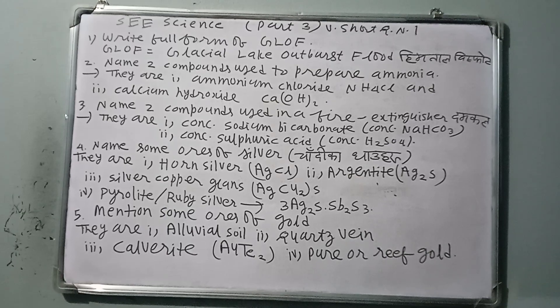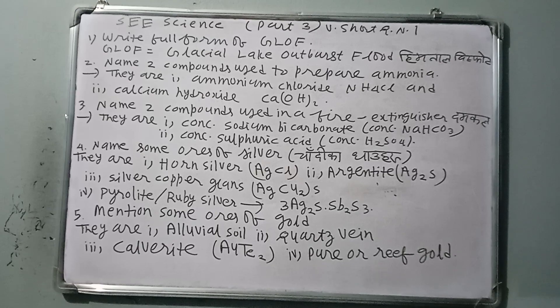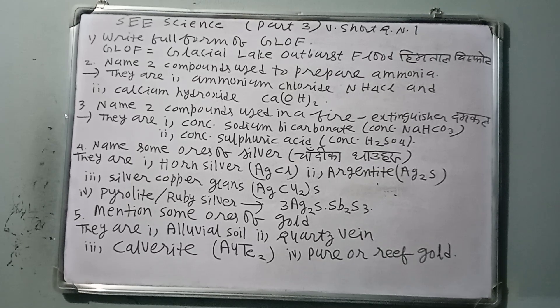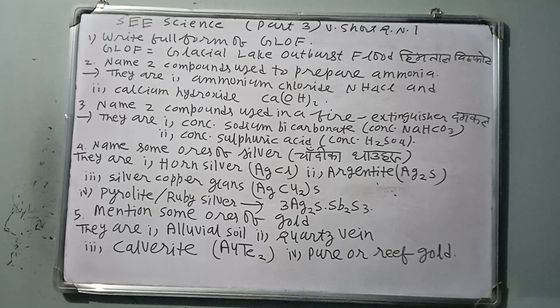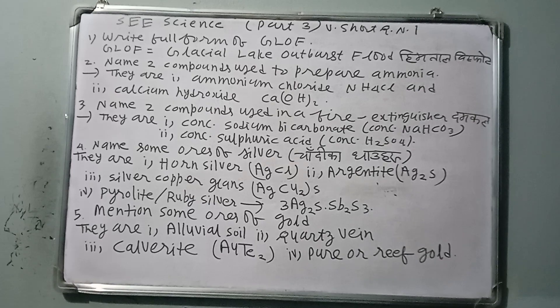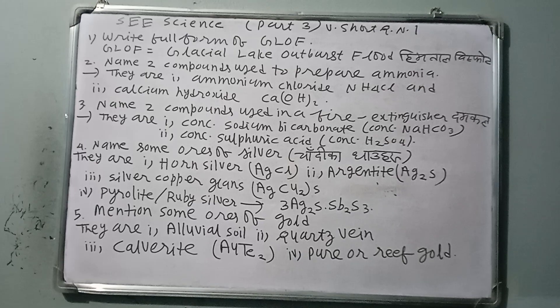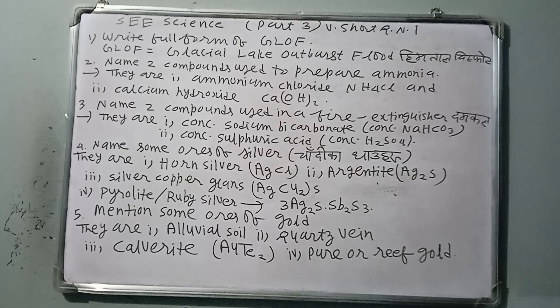Question number five: Mention some ores of gold. Some ores of gold are as follows. They are number one, Eluvial soil. Number two, Quartz vein. Number three, Calverite. Number four, Pure gold, reef gold, or natural gold.